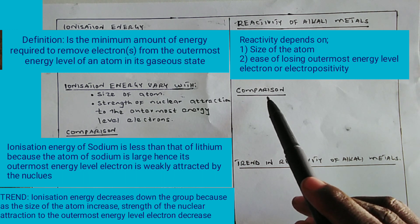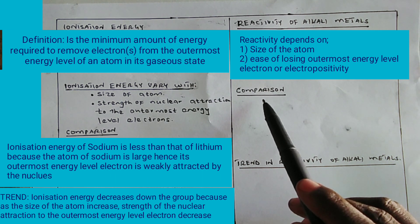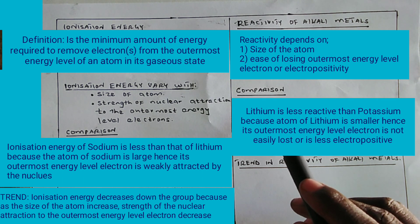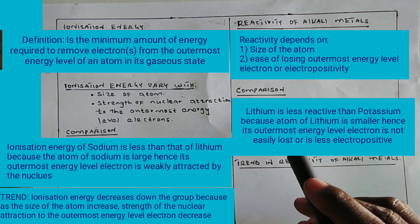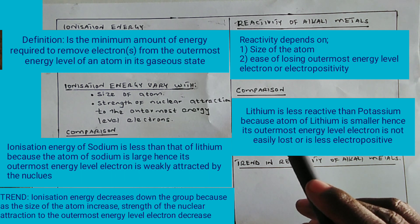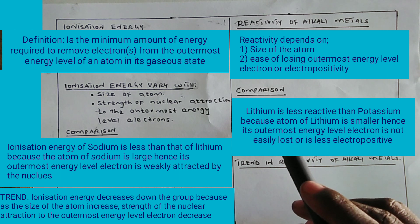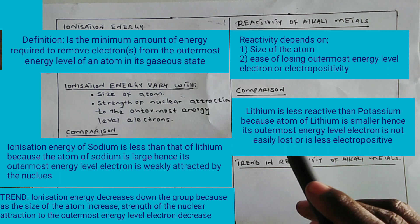When comparing the reactivity of two metals like lithium and potassium, we say lithium is less reactive than potassium because the lithium atom is smaller, hence it does not easily lose electrons, as the outermost electron is strongly attracted by the nucleus. You can also say the atom of lithium is smaller, hence it is less electropositive.